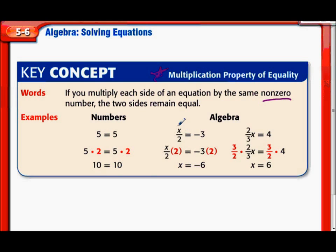Here, x over 2 equals negative 3. If you multiply both sides by 2, what happens? These 2s cancel out because really this becomes 2 divided by 2, and you're left with your x. Now negative 3 times 2 is negative 6. We've basically solved this division equation using multiplication.